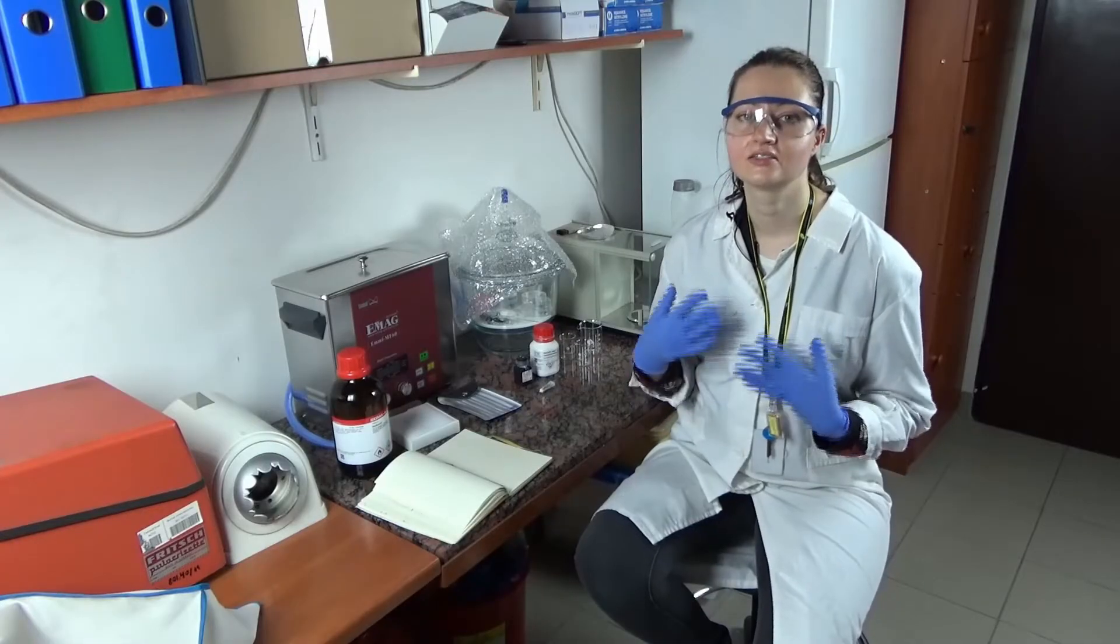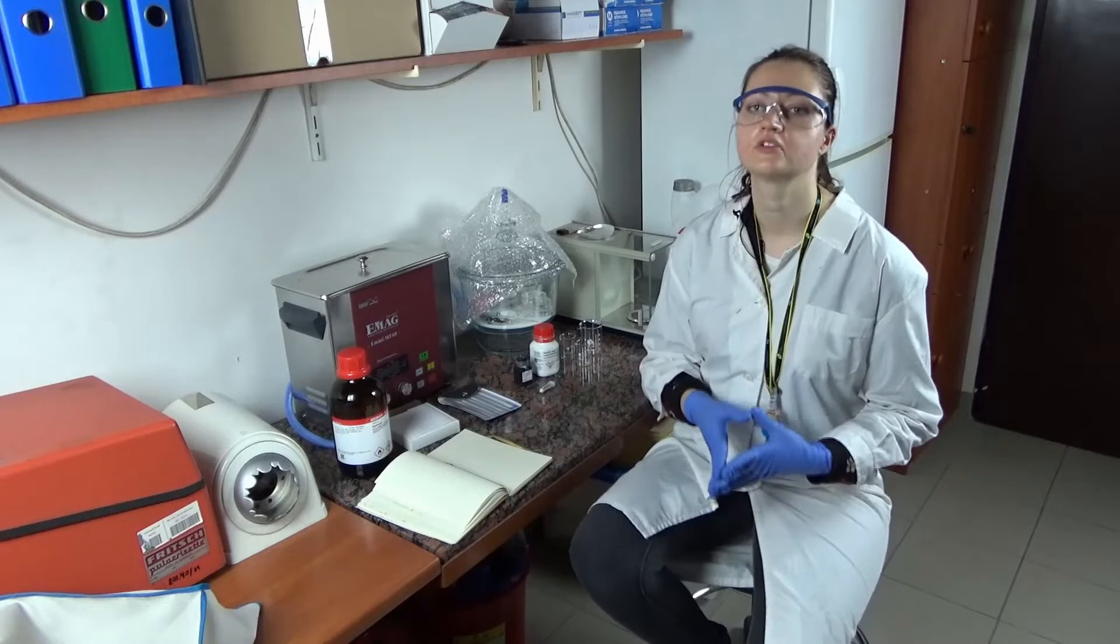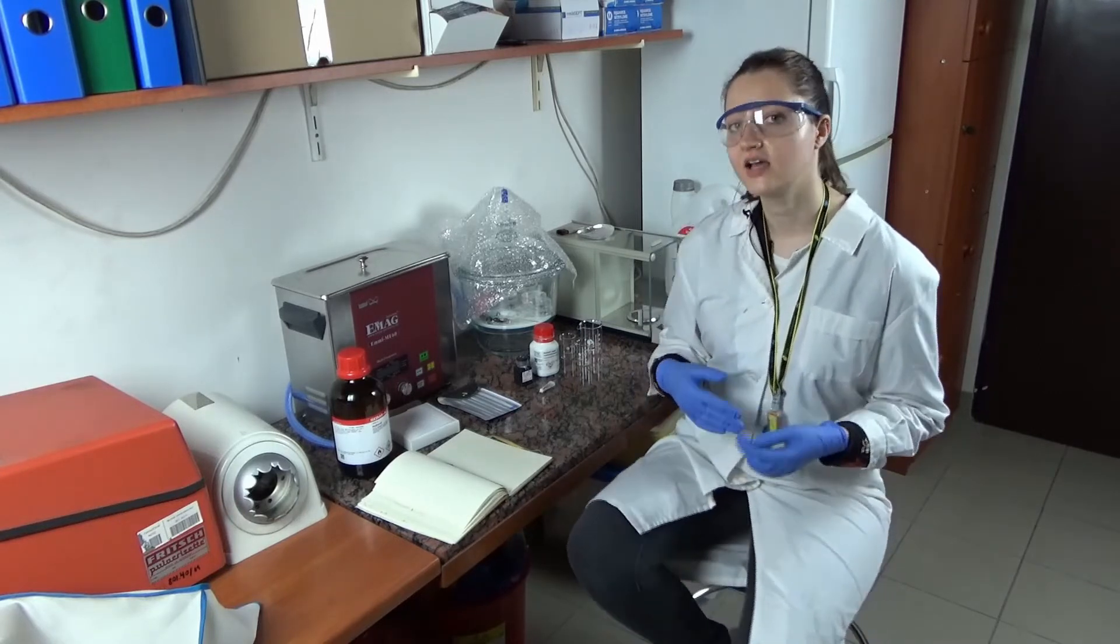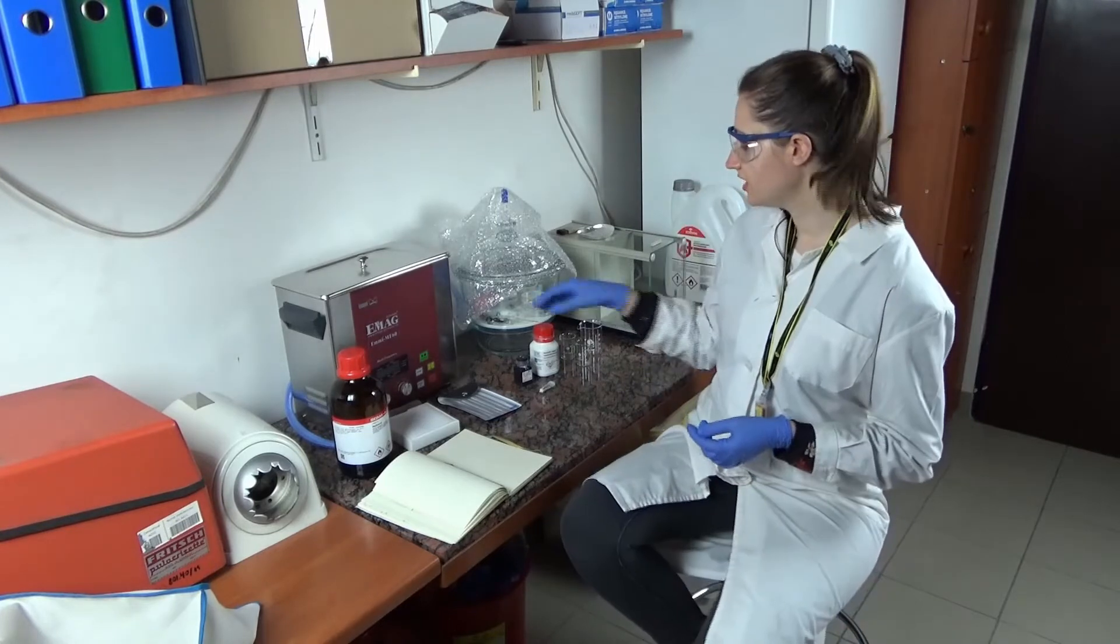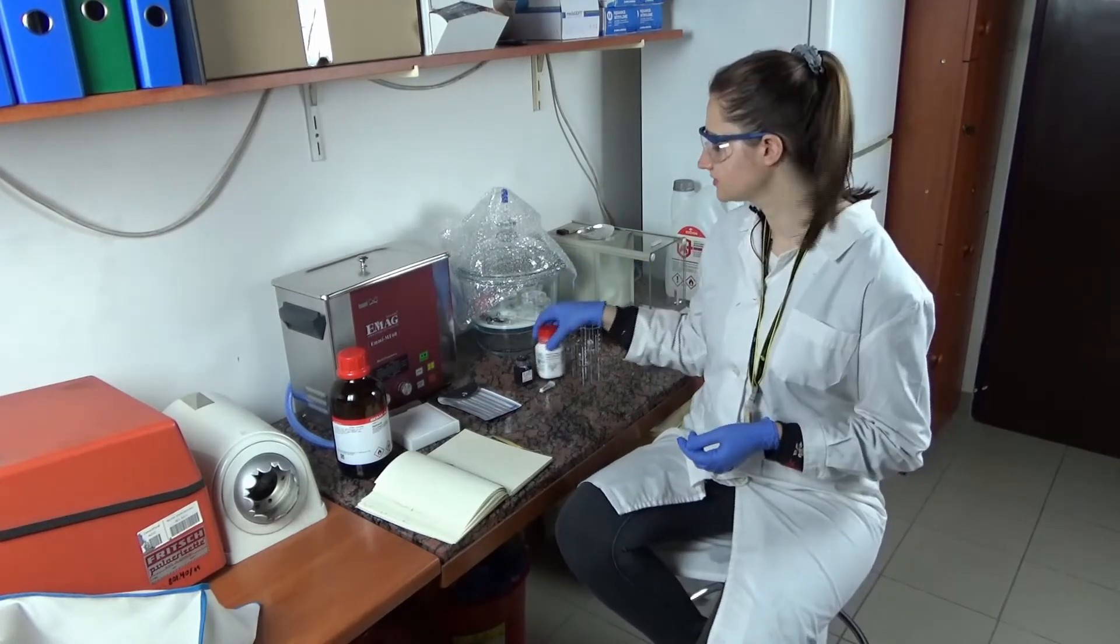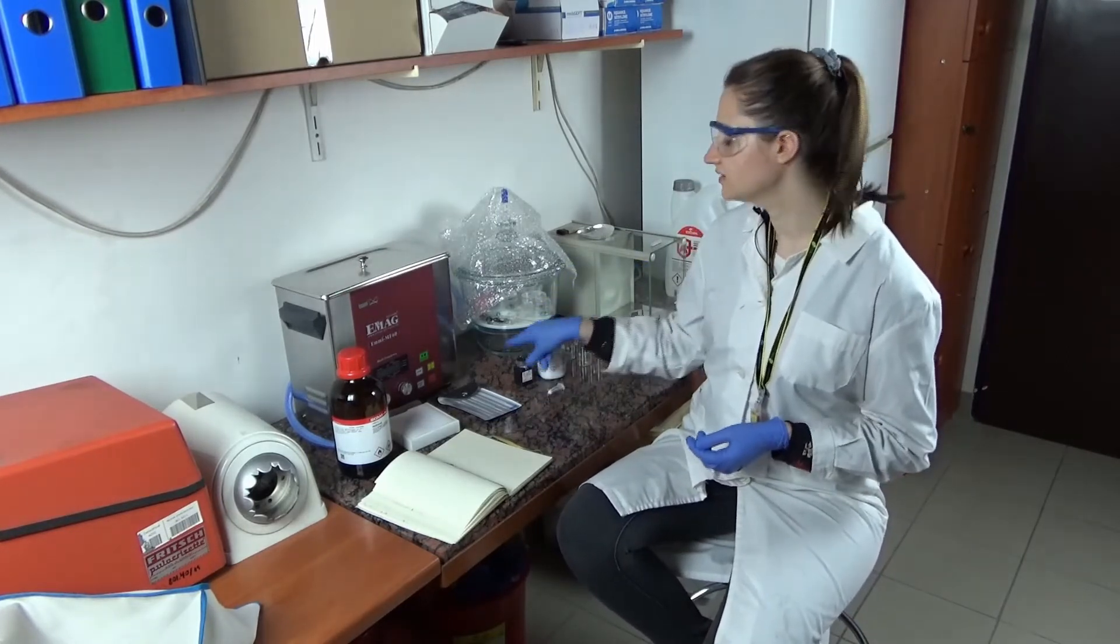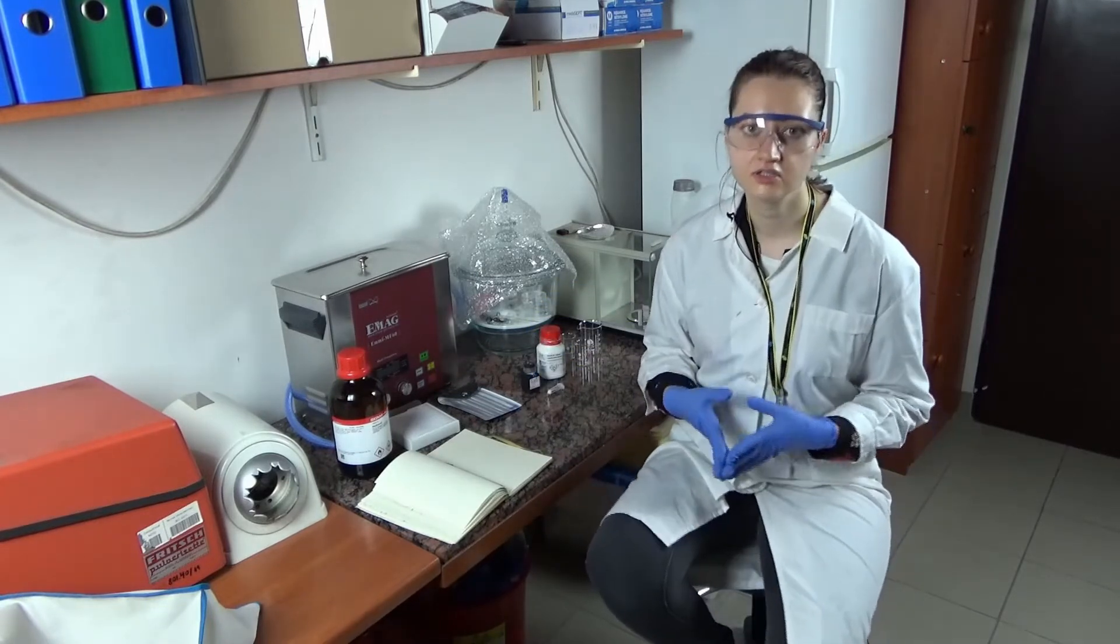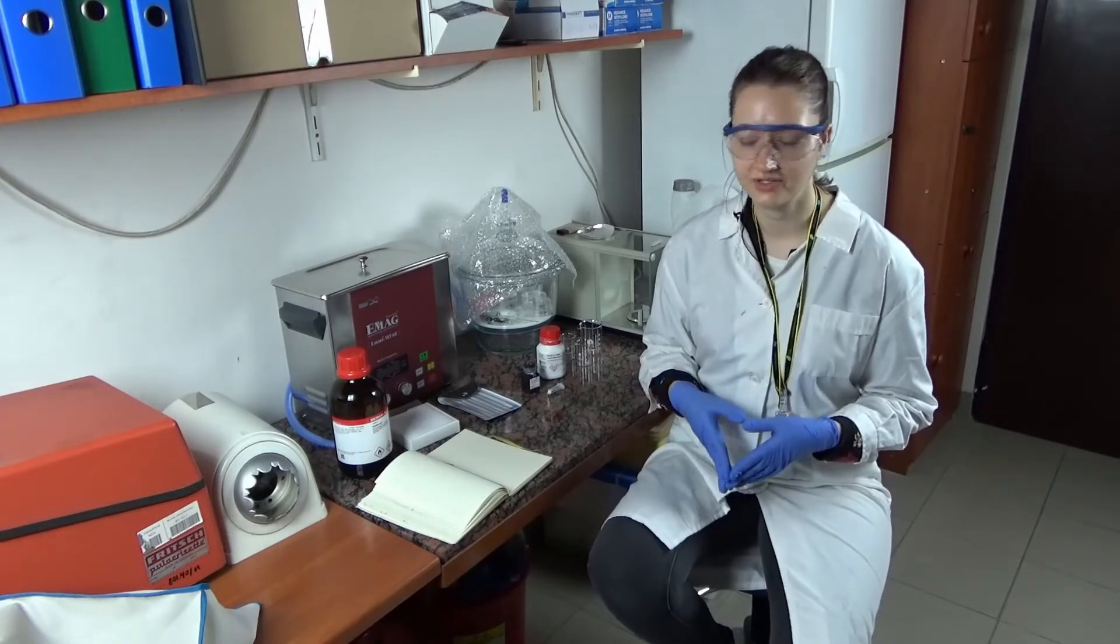As you probably guessed by yourself, the first step of each synthesis is proper weighing of all of the compounds. I've got here three compounds: first, copper chloride; second, triazole; and third, phenanthroline. You have to weigh each of the compounds carefully to not affect the final product.